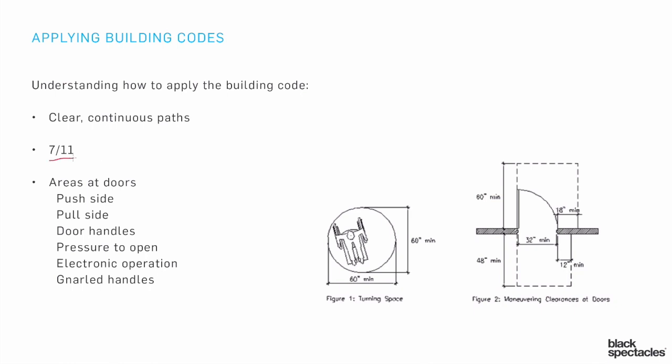A couple of other elements: the 7-11 stair — a 7-inch riser, 11-inch tread, with 7 inches being the maximum on the riser. That is the accessible stair size and set of dimensions.